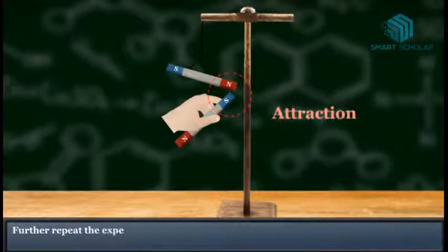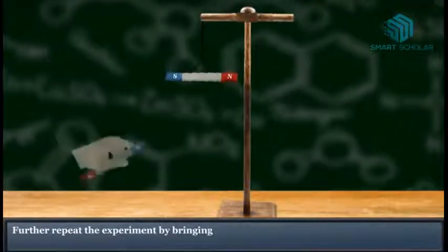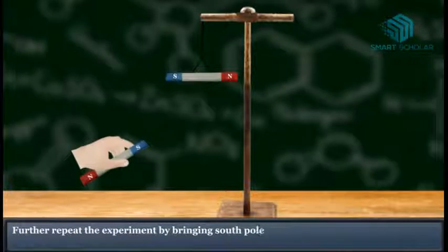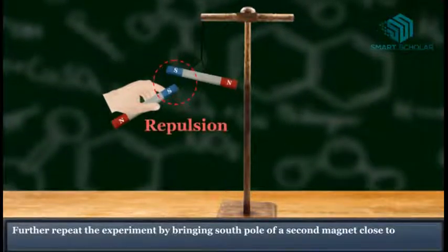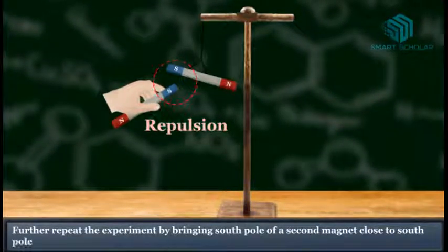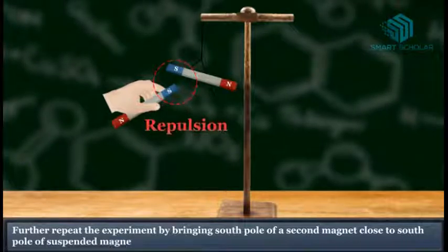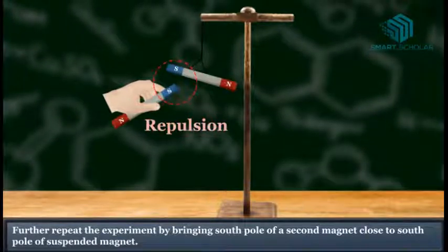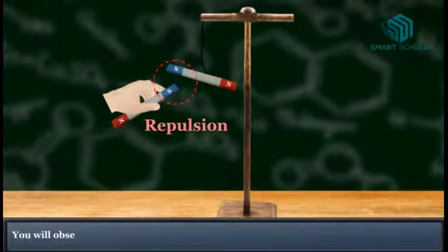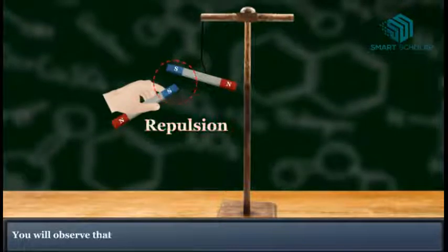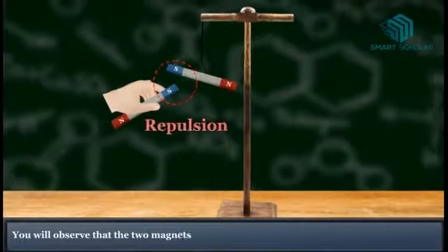Further, repeat the experiment by bringing the south pole of the second magnet close to the south pole of the suspended magnet. You will observe that the two magnets now repel each other.